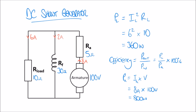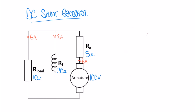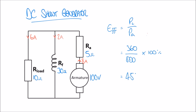Now that we know both the input power and output power, the efficiency equals the power in the load over the power in the armature: 360 watts over 800 watts times 100, which gives 45%. So only 45% of the power produced in the armature is actually transferred to the load in this case.